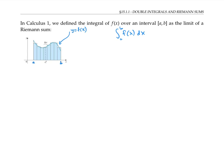We estimated the area by drawing a bunch of rectangles — say n rectangles for some number n — and estimating the area of each rectangle. The area of rectangle number i is going to be equal to its base times its height. We assume all the rectangles have the same width, which we call delta x, and that is the base of our rectangle. But the height of each rectangle is different.